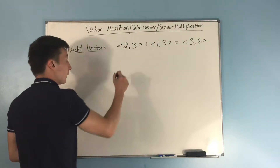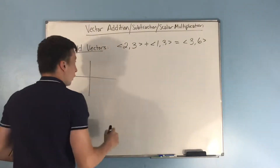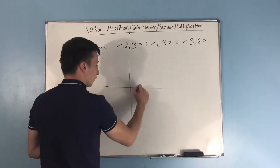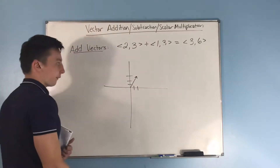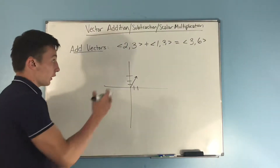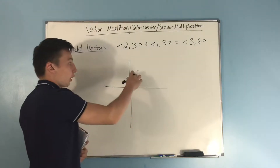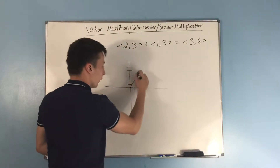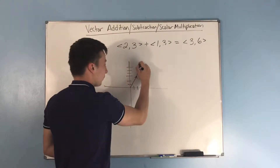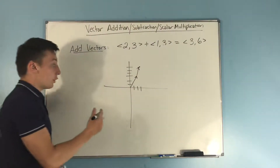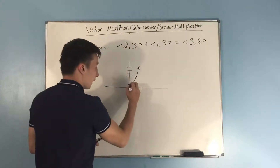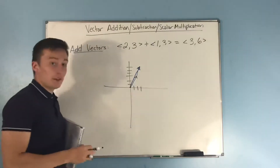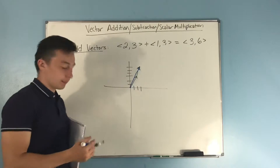Now let's visualize what's going on. We have the vector (2, 3) going from here to here. We also have the vector (1, 3), and we add it on to the tip of that first vector — so one over and three up. We draw a vector up to that point. Then we draw a resultant vector that connects the initial point to the final point you reach. That resultant vector is three over and six up, so this makes sense.